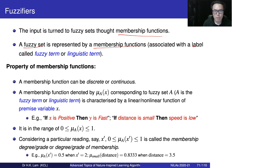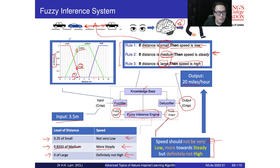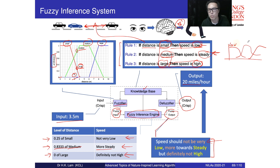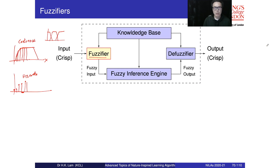The label associated with a membership function is called a fuzzy term or linguistic term. For example, the terms small, medium, and large are fuzzy or linguistic terms for the input. Similarly, in the output we have terms like low, steady, and high, each with a corresponding membership function.